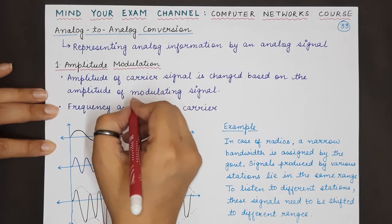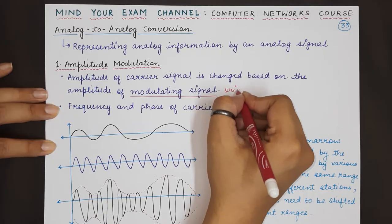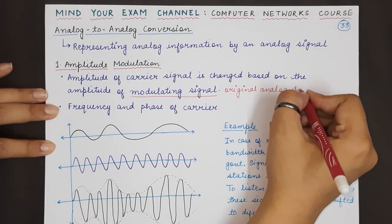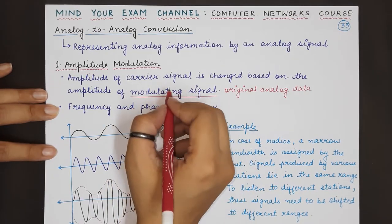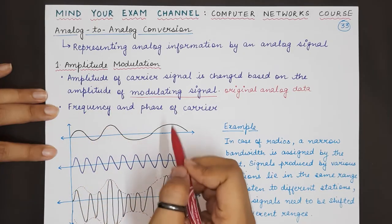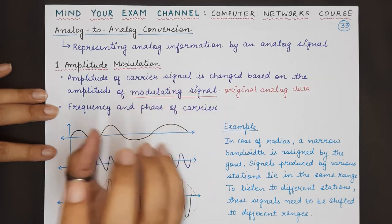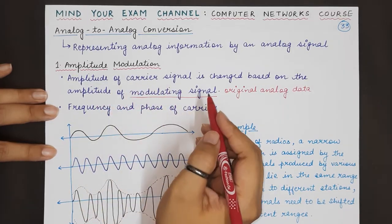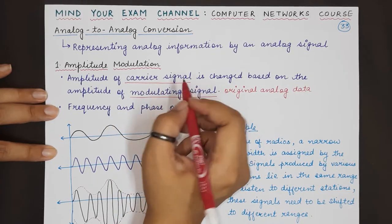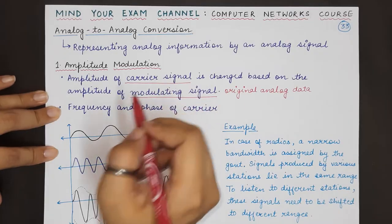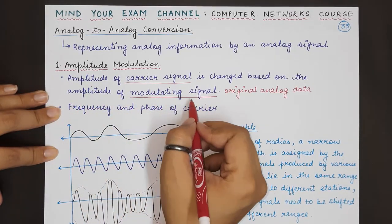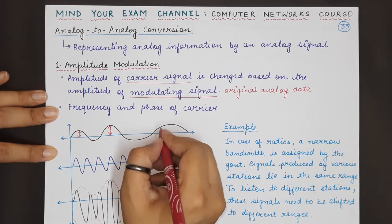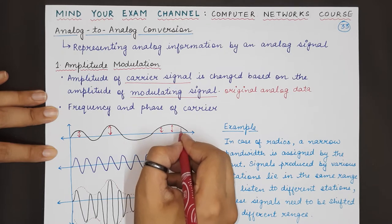So what is a modulating signal? This is the signal which we originally want to transmit — the original information or original analog data. This signal, the modulating signal, has some kind of amplitude, frequency, and phase, because as we have seen in previous videos, every analog signal has a frequency, phase, and amplitude. We use a second analog signal called the carrier signal. The carrier signal will be changed depending on how the amplitude of the modulating signal is increasing or decreasing — the amplitude of the carrier signal will also increase or decrease.